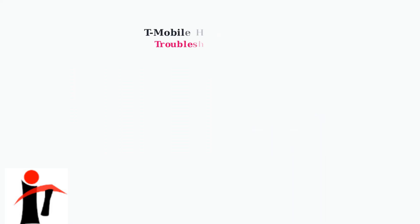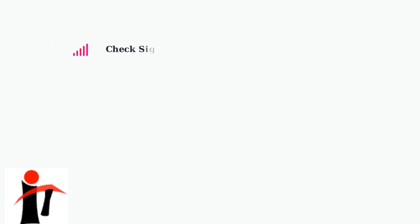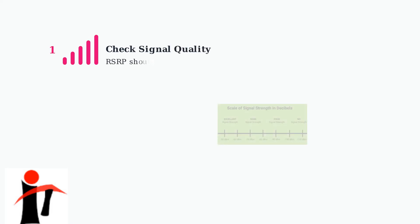When experiencing connectivity issues with T-Mobile home internet, follow these systematic troubleshooting steps to resolve the problem efficiently. First, assess your signal quality. The reference signal received power, or RSRP, should be above negative 110 decibels milliwatts for reliable connectivity.